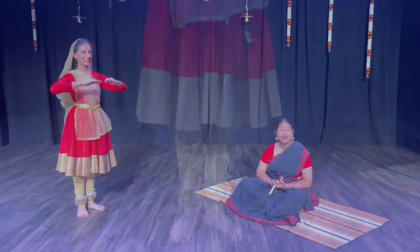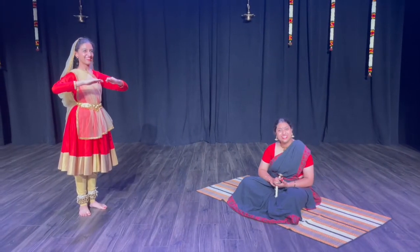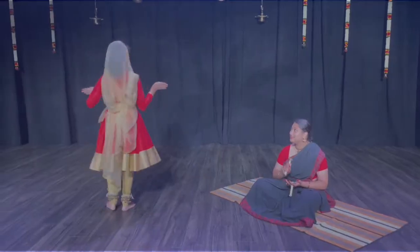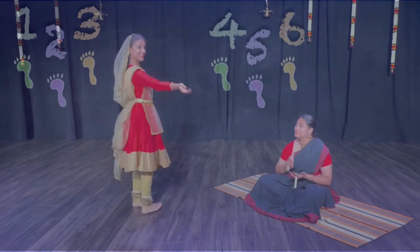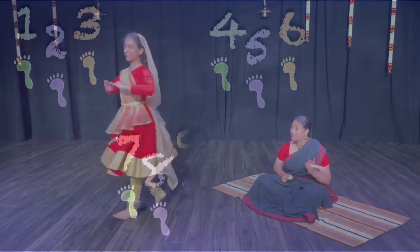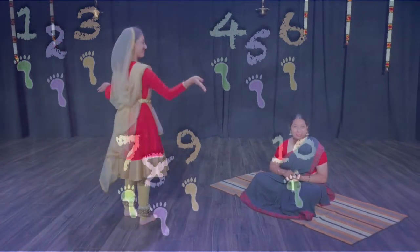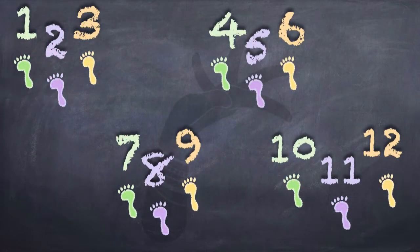Now, Aru wants to get to twelve. Let's count as she dances: one, two, three, four, five, six, seven, eight, nine, ten, eleven, twelve. Aru needed four turns — four sets of three to get to twelve.